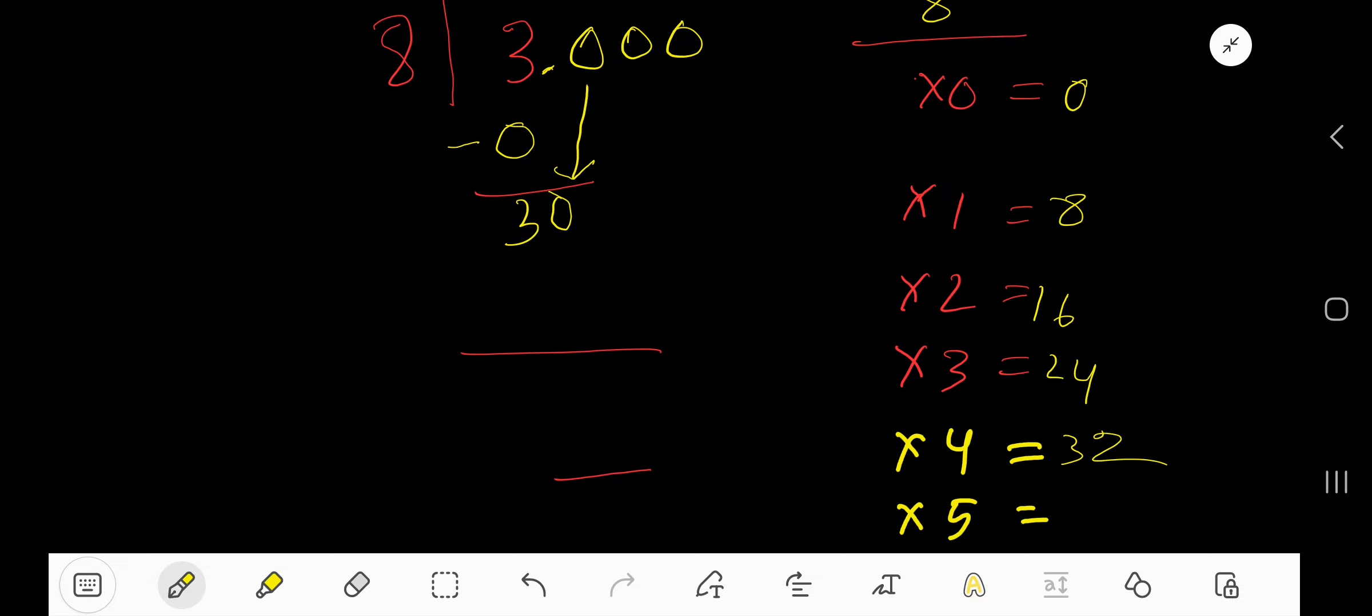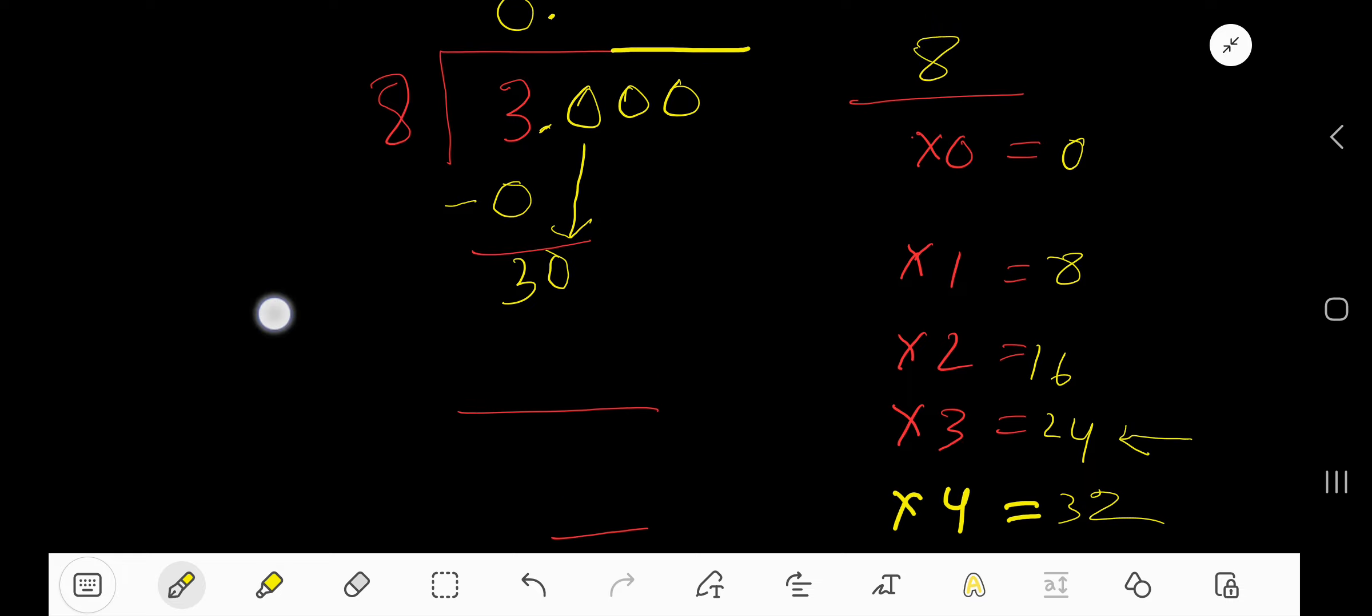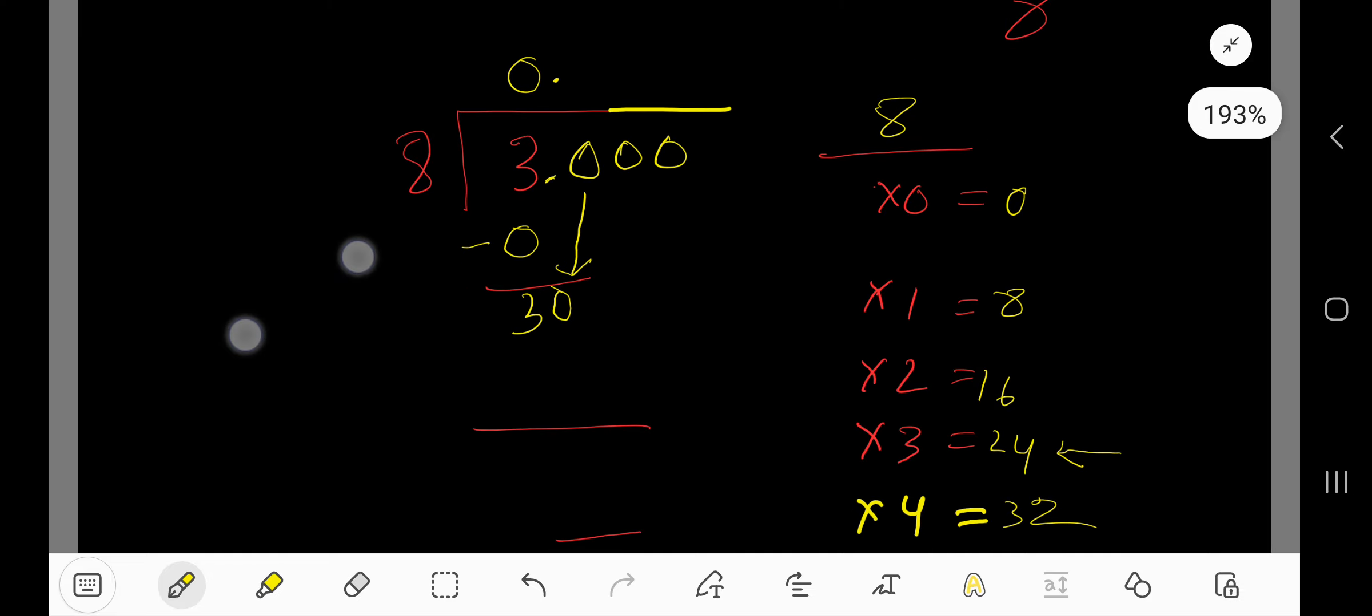We have 30, so we stop here. 8 goes into 30 how many times? 3 times. 3 times 8 is 24. If you subtract, you get 6.